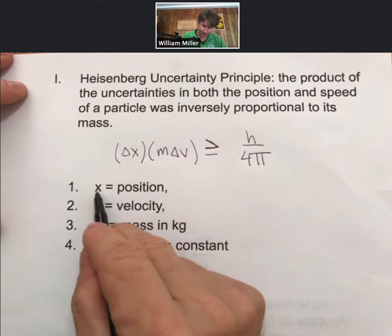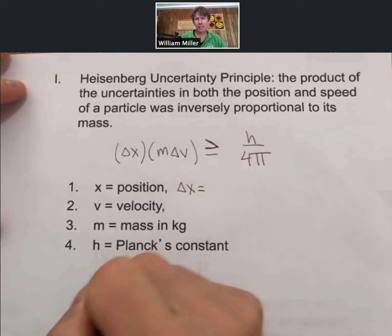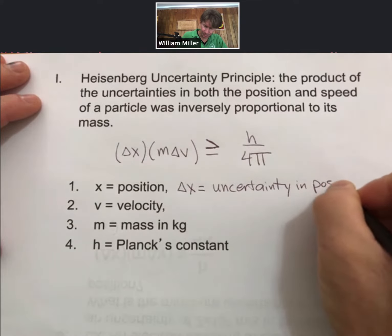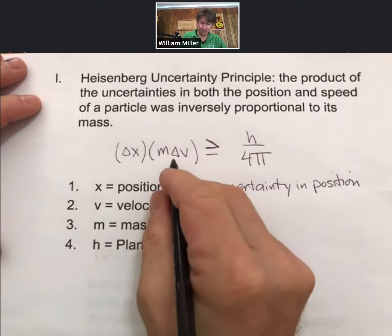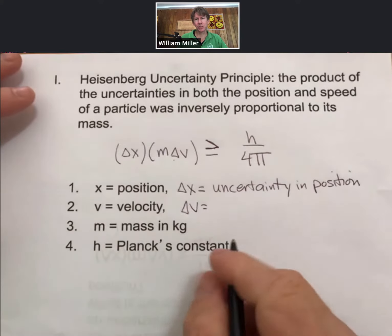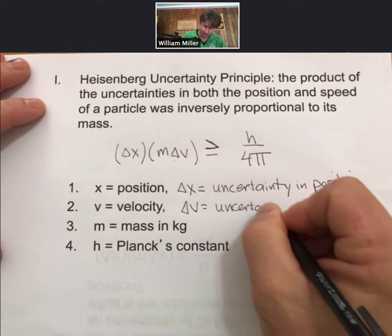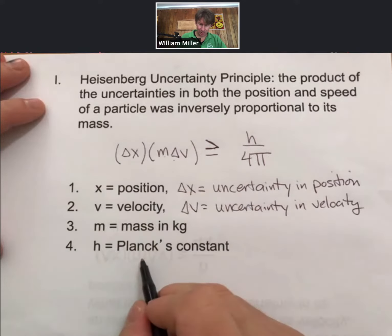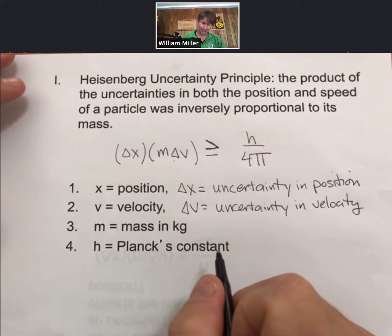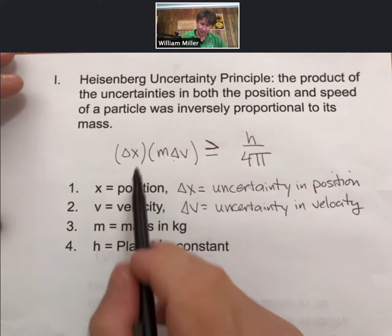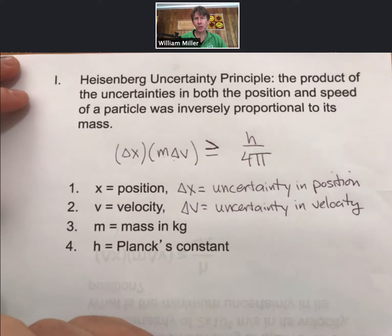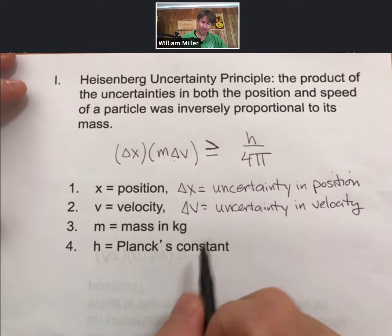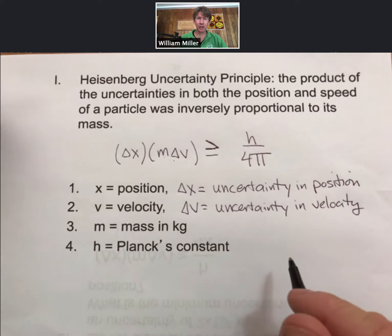Let me define the terms. x is position, so delta x is the uncertainty in position. v is the velocity, while delta v is the uncertainty in velocity. m is mass in kilograms, h is Planck's constant, and pi is pi. This uncertainty principle will only cause measurable uncertainty when you get to very small masses, like electrons.